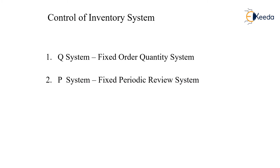The control of inventory system is generally dependent upon two factors or two systems: the Q system and the P system. Either the quantity is fixed, which is called the fixed order quantity system or Q system, or if the review period is constant, then it is called the fixed periodic review system, which is the P system.